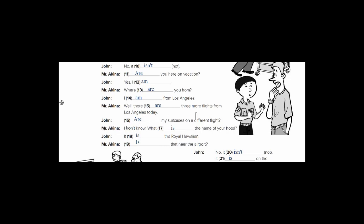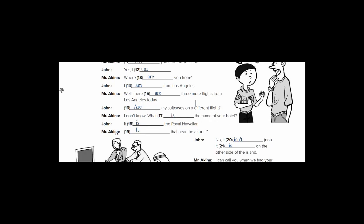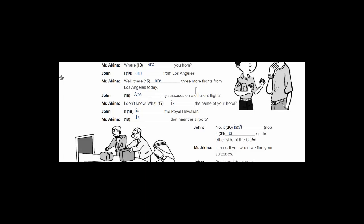Mr. Akina said, I don't know. What is the name of your hotel? John: It is the Royal Hawaiian. Mr. Akina: Is that near the airport? No, it isn't. It is on the other side of the island.